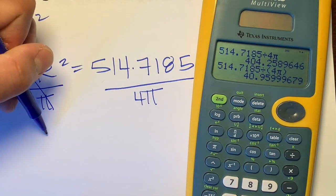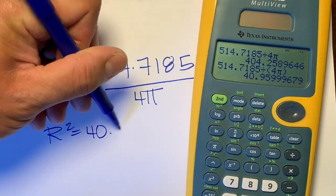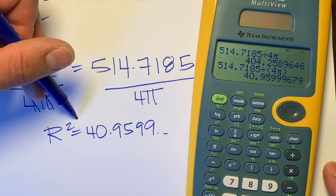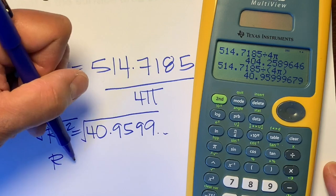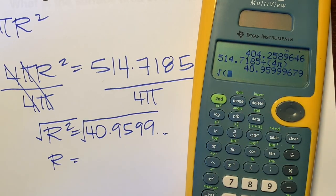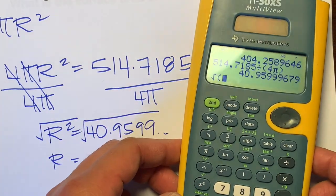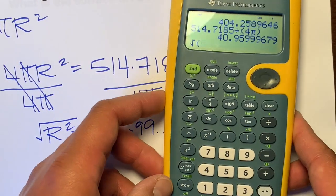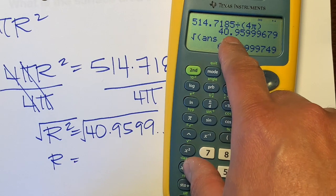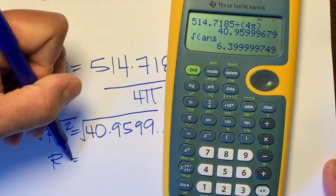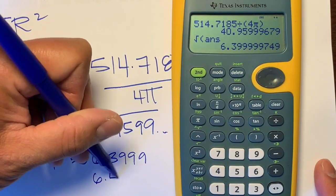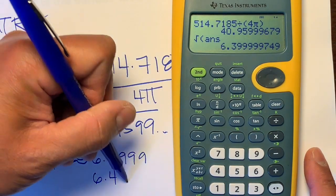So R squared equals approximately 40.9599. We want to get R by itself — the opposite of squaring is square rooting. Using the calculator, the square root of 40.9599 is approximately 6.39999, or 6.4. And don't forget the units: 6.4 meters. So there is your final answer.